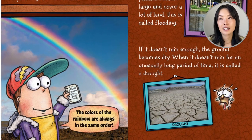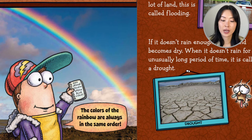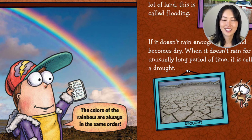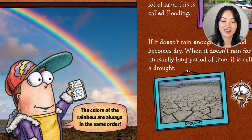Buzz looks at a rainbow. Here's a fun fact: the colors of the rainbow are always in the same order. The colors you see are always in this order — they're not going to be mixed up.